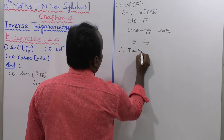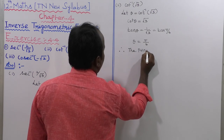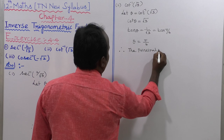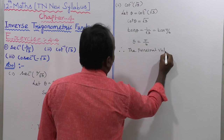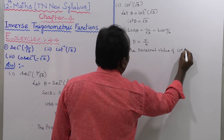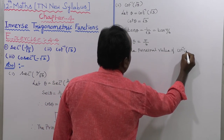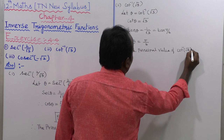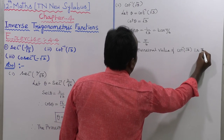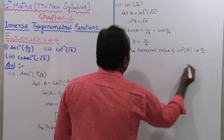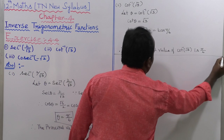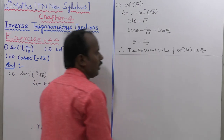Therefore, the principal value of cot inverse of root 3 is pi by 6. That is all for the second subdivision.